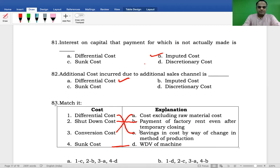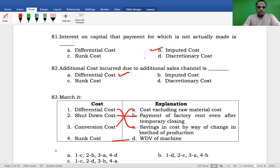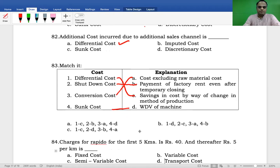So what is the answer? The right answer is: 1-c, 2-b, 3-a, 4-d. That's the correct answer.